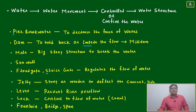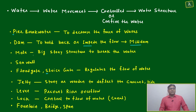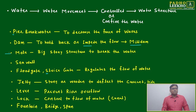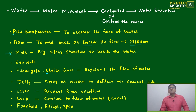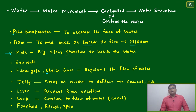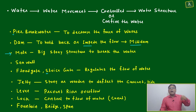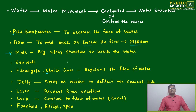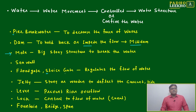A dam is used to hold back or impede the flow of water — also called a mill dam. A mole is a large stony structure used to break the water, typically found near cities close to a violent sea or where very high tides occur.